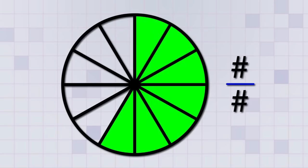The circle is divided into twelve equal parts, and seven of those parts are shaded green. So seven over twelve, or seven-twelfths of the circle, is shaded green.